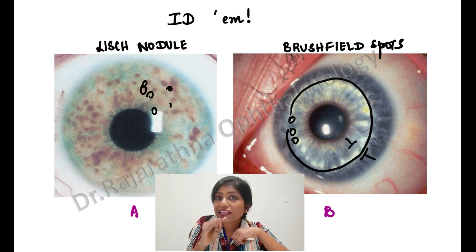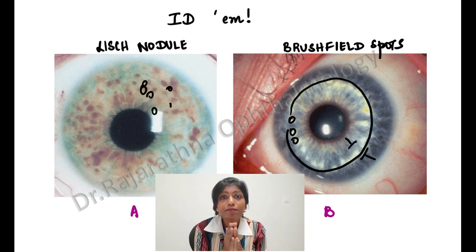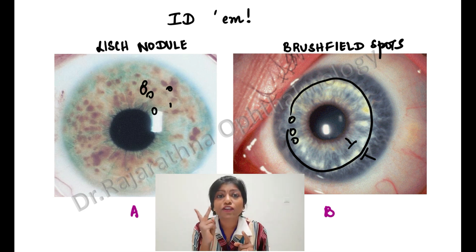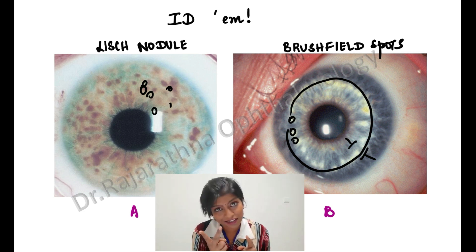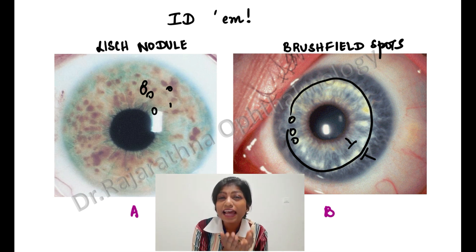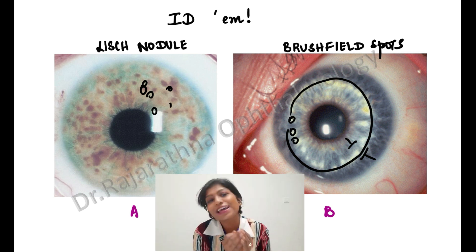So we have Lisch nodules and Brushfield spots. There's no reason for confusion — just look at the color and the distribution across the iris. Both are benign findings. Importantly, in neurofibromatosis, the finding is a hamartoma — that's extremely important.